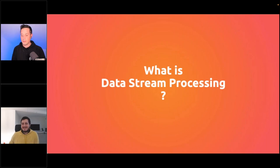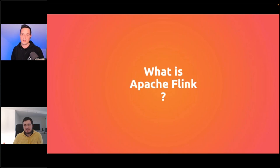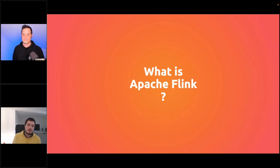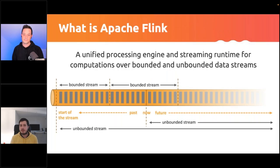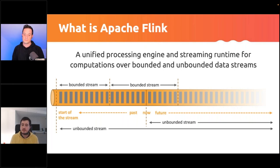That touches on the next topic: what is Apache Flink? This is also a question we still get asked a lot, years after Flink was conceived. The Wikipedia answer is that Flink is an open-source distributed stream processing framework that allows you to process real-time data streams with — and these are the three key things — low latency, high throughput, and high fault tolerance. It also supports batch processing as well as event-driven stream processing.